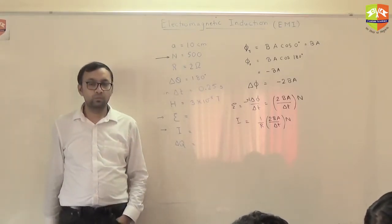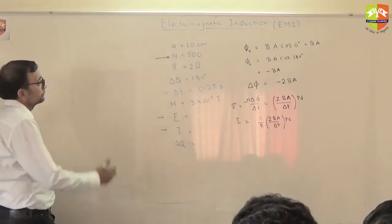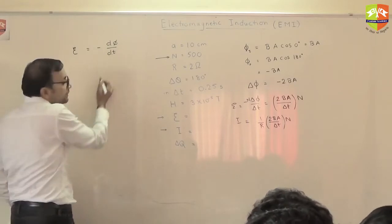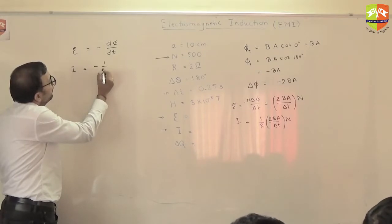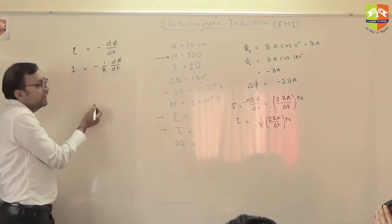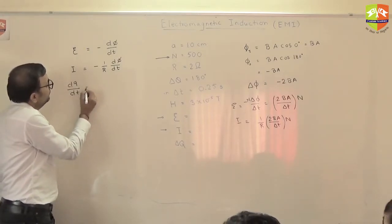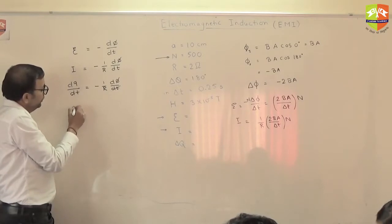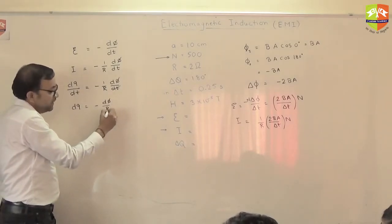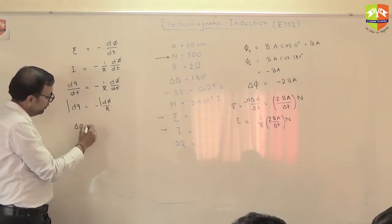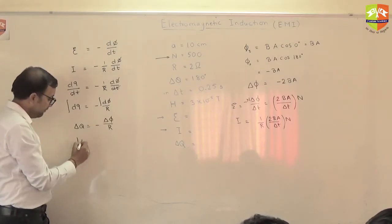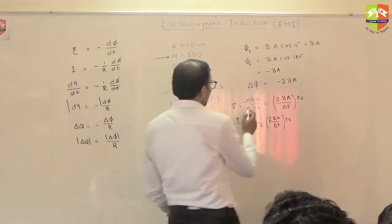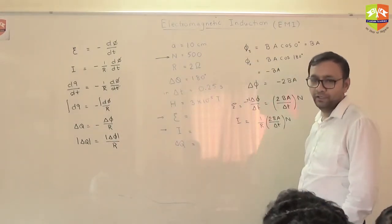How will you get delta Q? EMF is minus d(phi)/dt. Current is also dQ/dt. So dt and dt cancel, and you get dQ = minus d(phi)/R. When you integrate this, delta Q equals minus change in flux divided by R. The magnitude of charge that has passed across is the magnitude of change in flux divided by resistance — you just divide the change in flux by resistance to get the charge that has flown.